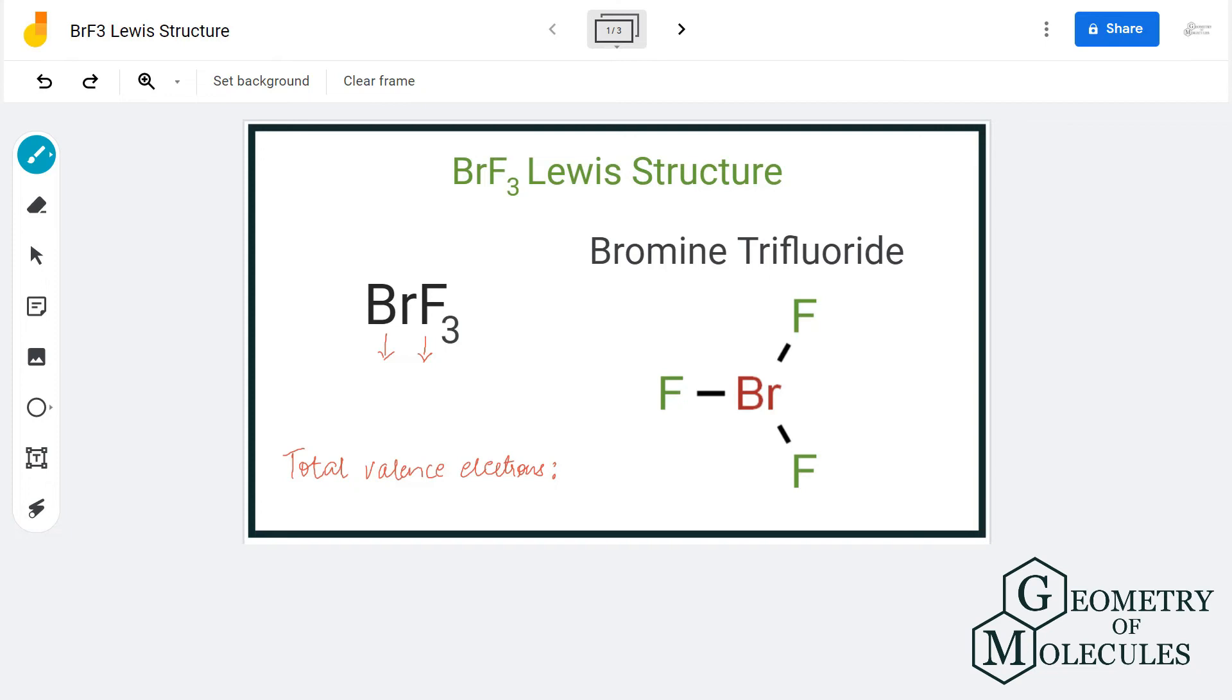Hi guys, in this video we are going to look at the Lewis structure of BrF3. BrF3 is a chemical formula for bromine trifluoride which is made up of one bromine atom and three fluorine atoms.